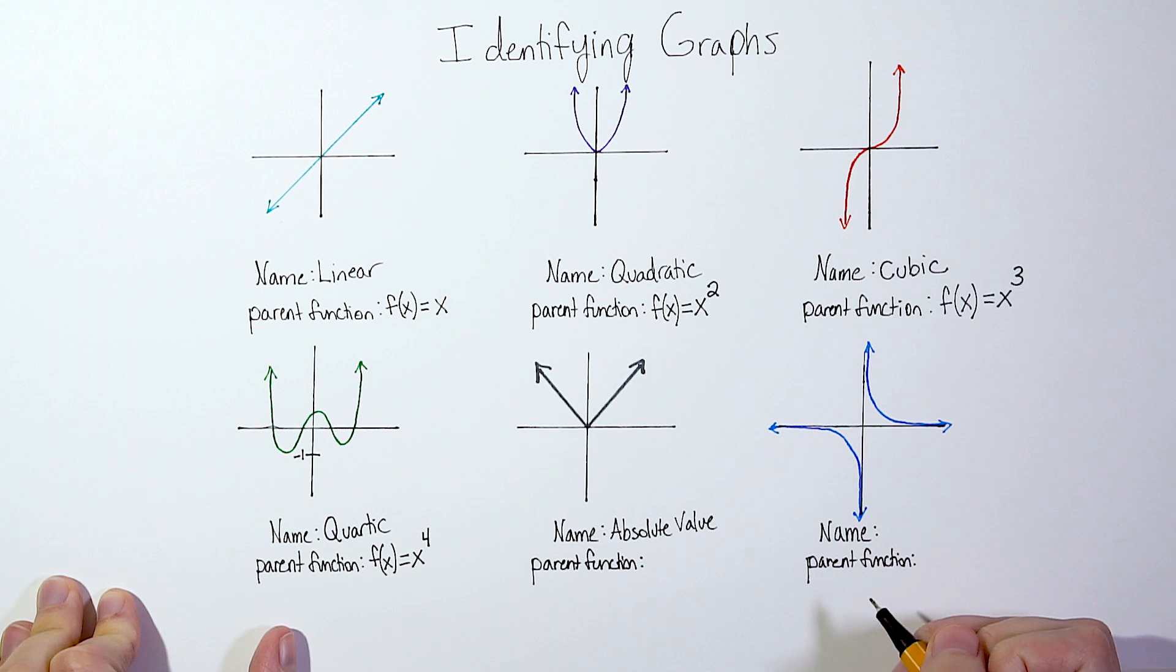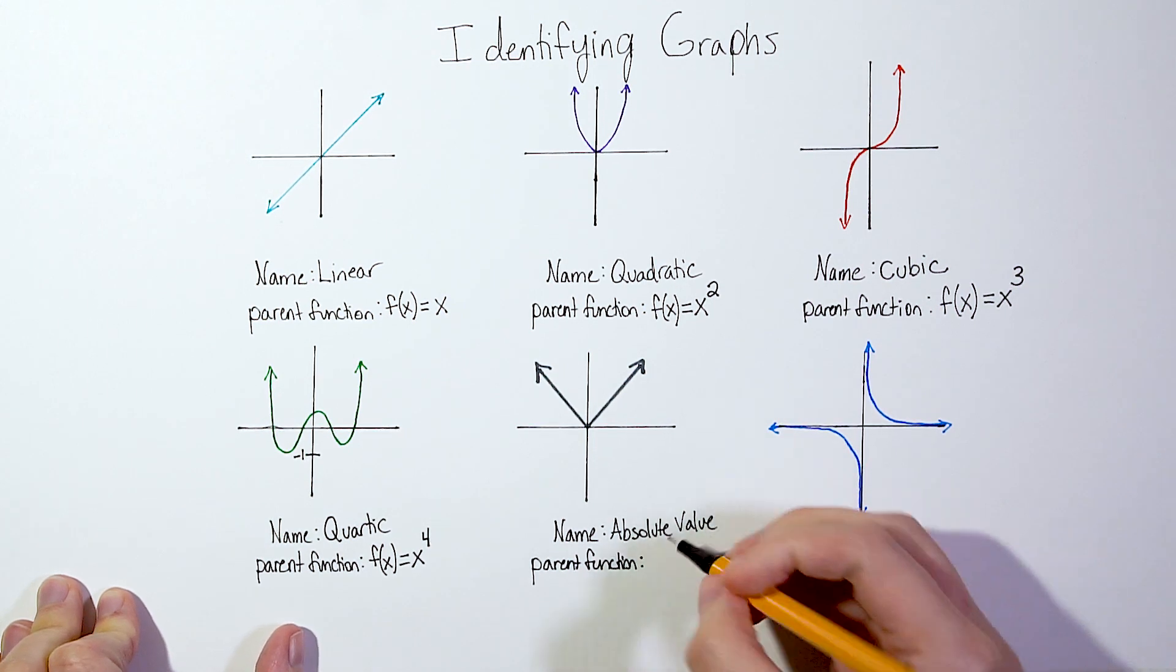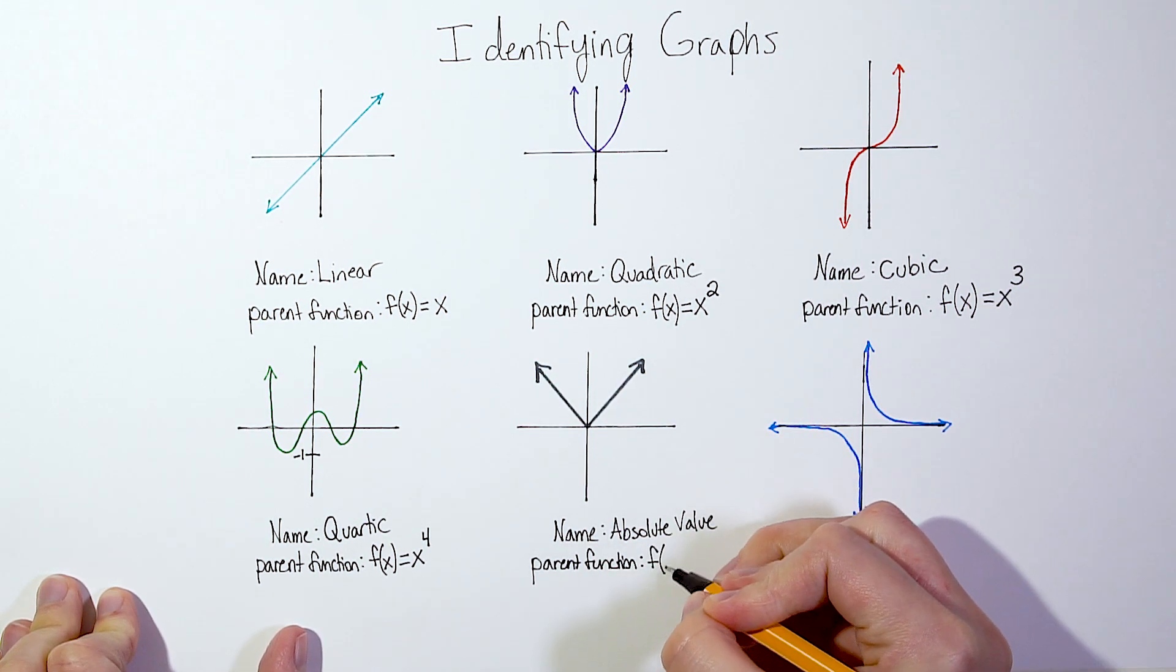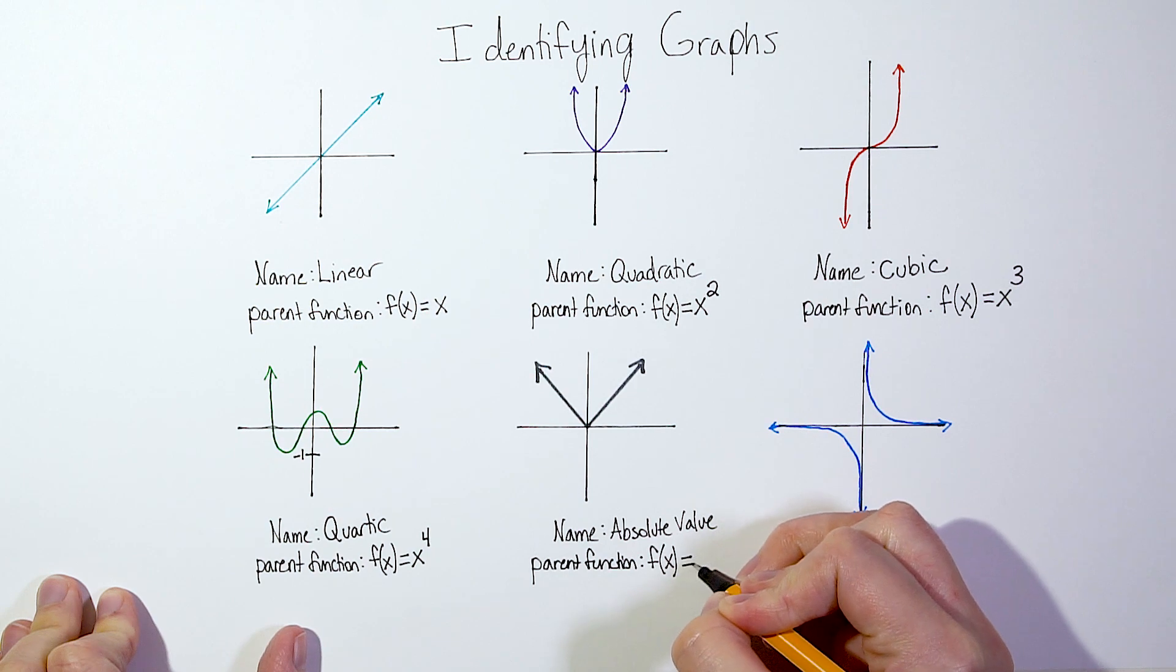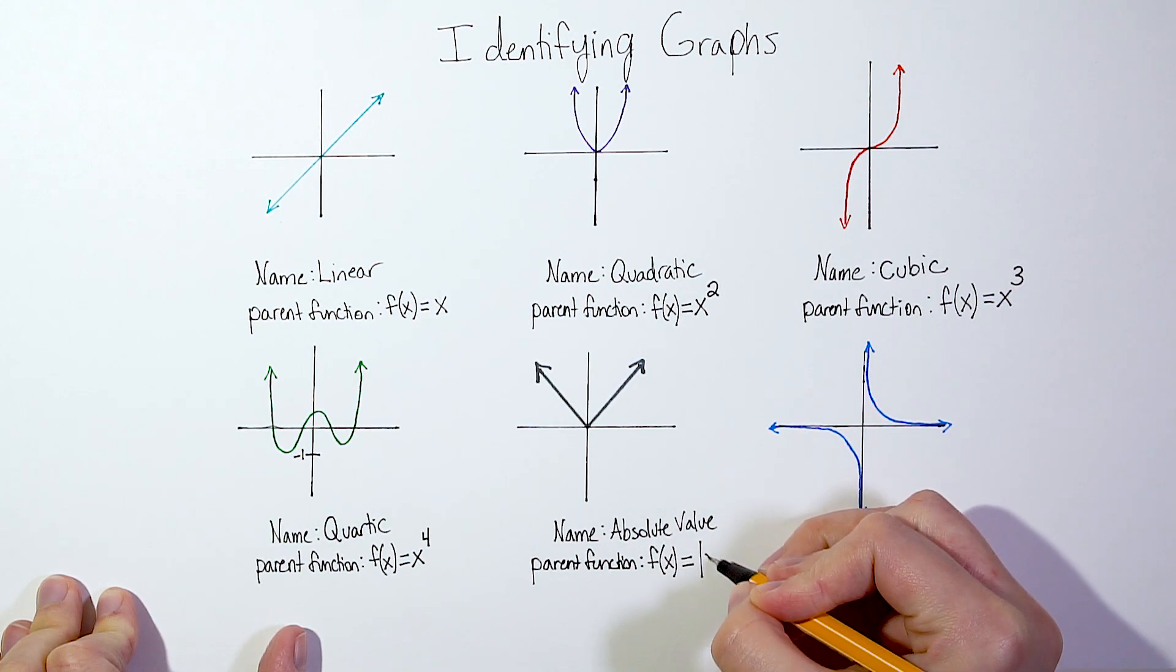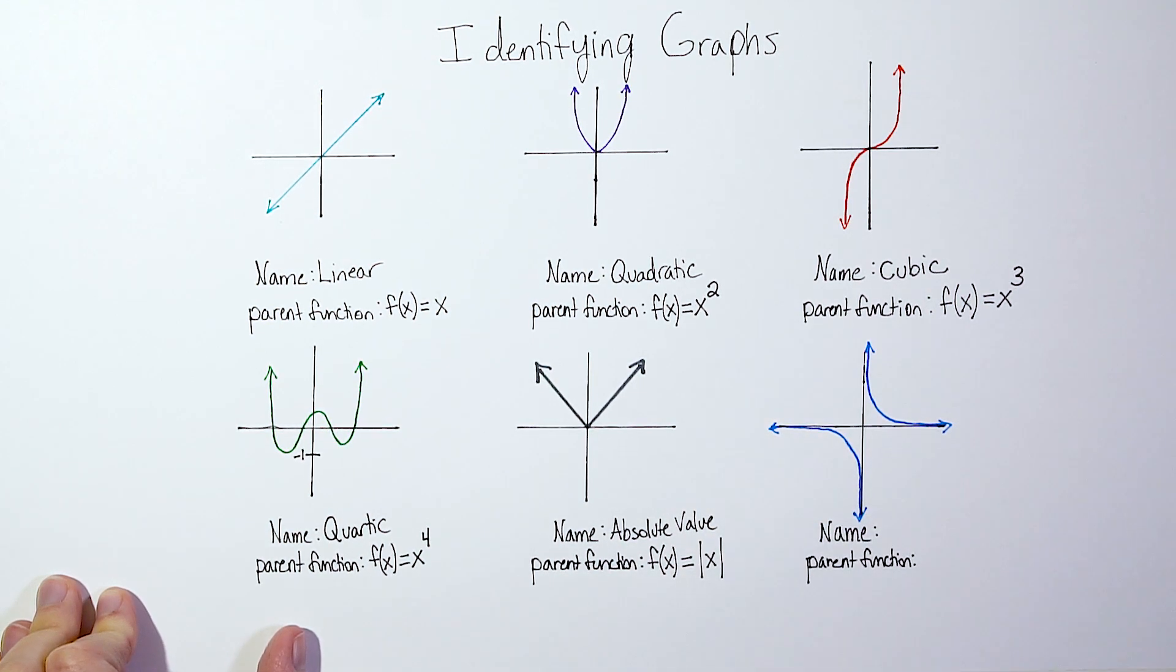And the parent function of an absolute value graph is f(x), or y, equals the absolute value of x. So that's what those little bars are on either side of the x. It's saying the absolute value of x.